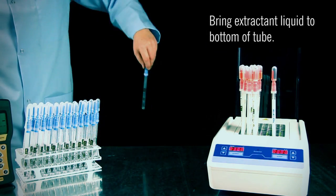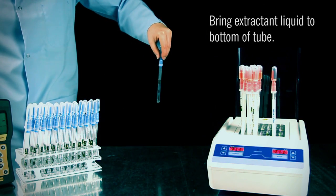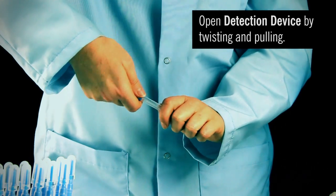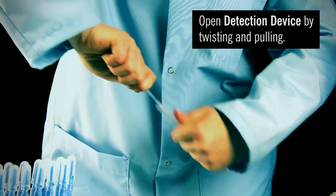Holding the swab upright, forcefully flick the device in a downward motion. This will bring droplets of chemistry to the bottom of the tube. Twist and pull to remove the snap valve from the detection device tube.